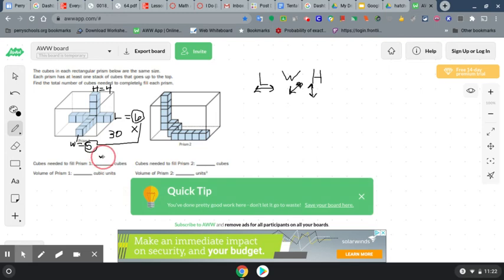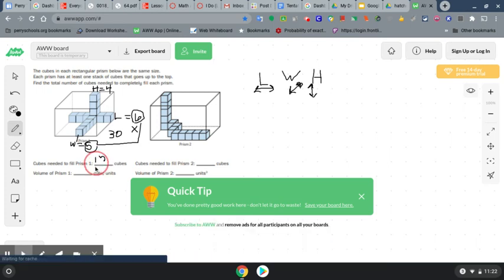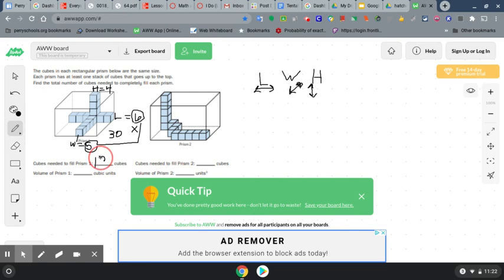And that means 30 times four would be the volume for 100. One hundred and twenty cubes. And that means I have one hundred and twenty cubic units.